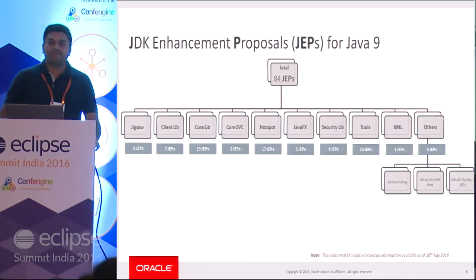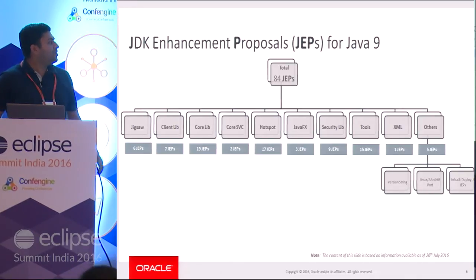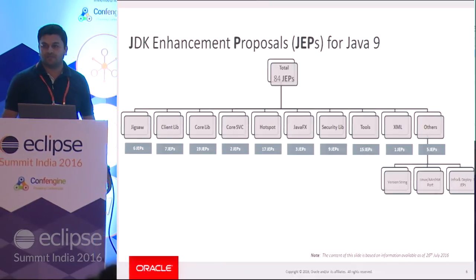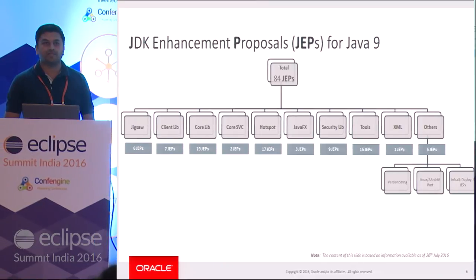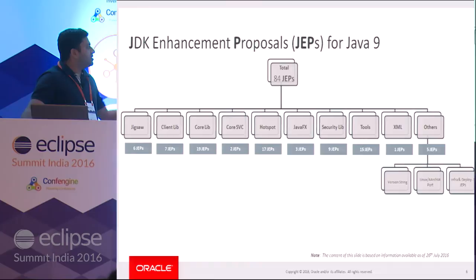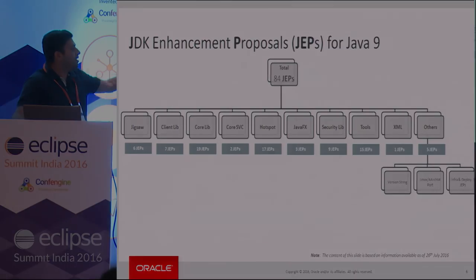So, a JEP — just a quick introduction: we are talking about 84 JDK Enhancement Proposals as part of the Java 9 release, which will be coming out in March 2017. If you see, there are six JEPs with respect to Jigsaw.